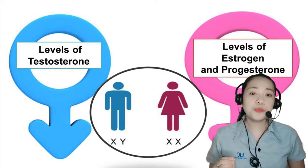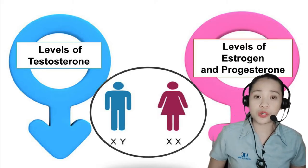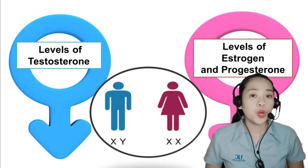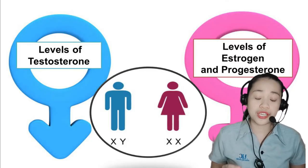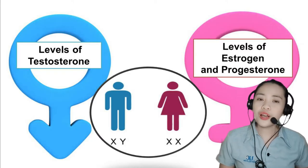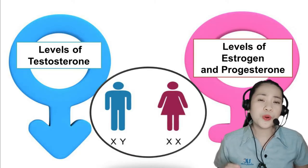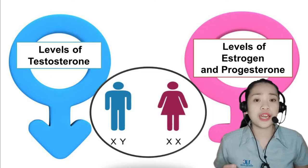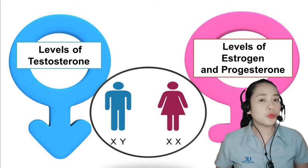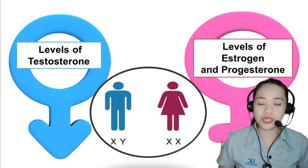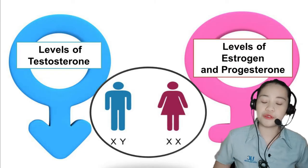The levels of certain hormones — chemicals in our body responsible for sustaining bodily processes — are also used as markers. For example, human males tend to have higher levels of testosterone, which is associated with sex drive and aggression. On the other hand, human females tend to have higher levels of estrogen and progesterone, which are associated with lactation, menstruation, and other female reproductive functions.